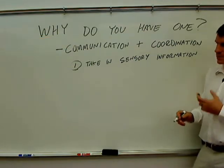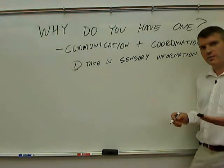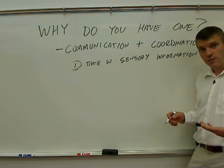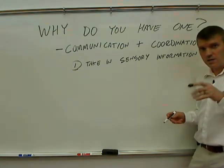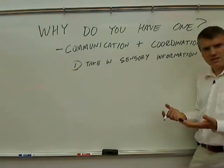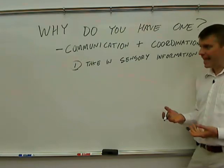So the nervous system takes in sensory information. It takes in sensory information about the outside world. For example, what you see, what you touch on your skin, the temperature, things like that.